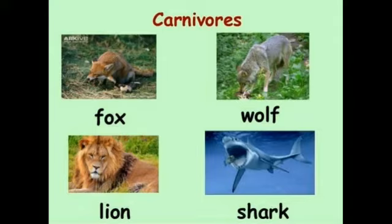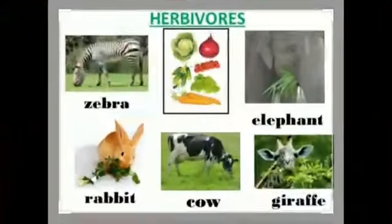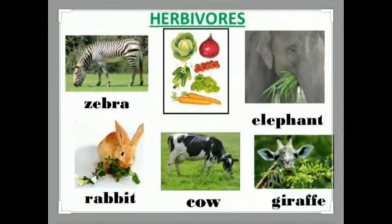Herbivores are those animals which eat only plants. You can see examples of herbivores like giraffe, rabbit, and elephant.